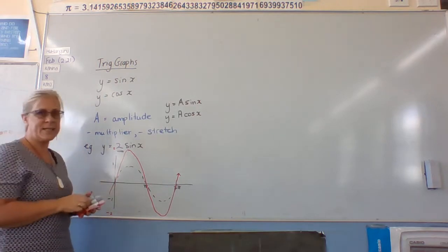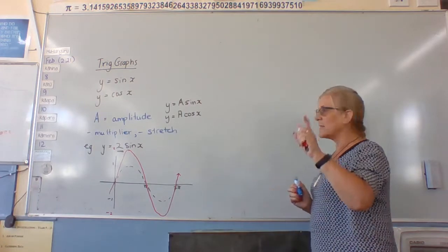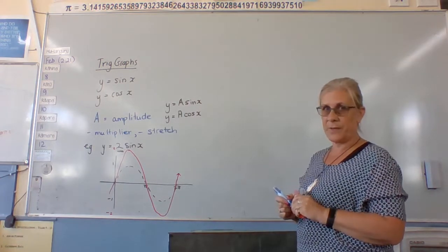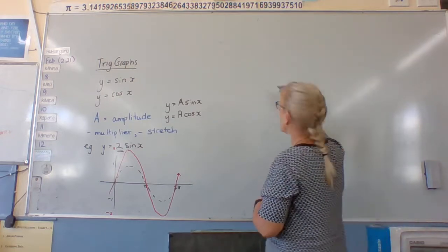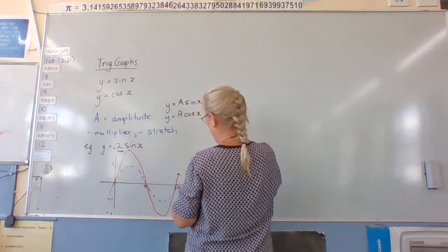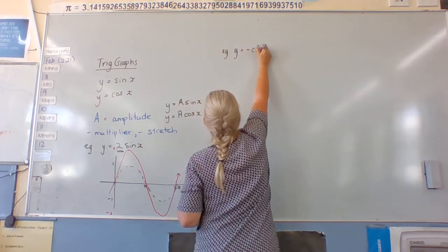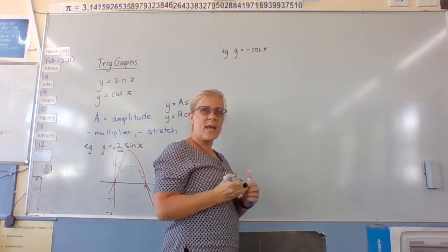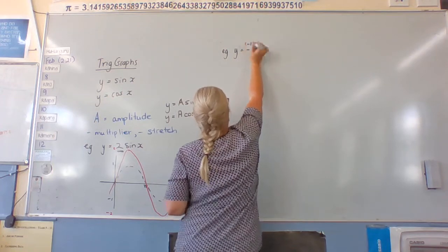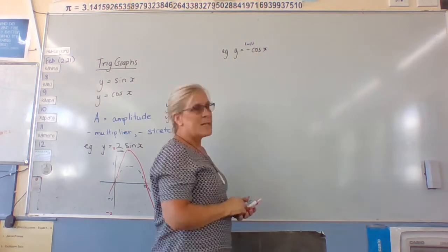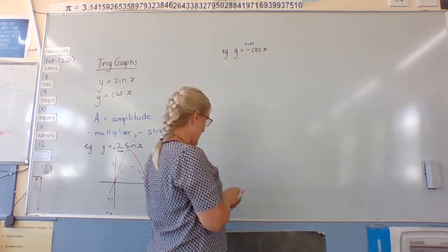Sometimes a can be negative. What do you think a negative a will do? It turns it upside down — the whole graph reflects in the x-axis. So if we look at another example, y equals negative cosine x. What multiplier is that? Negative one. So that means we're not changing the height of it, we're just reflecting in the axis.